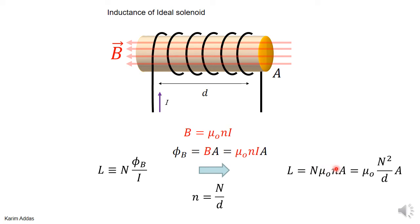If you want, you can write small n as capital N over d, so you have two capital N's and one d in the denominator. This is another way of writing the inductance.